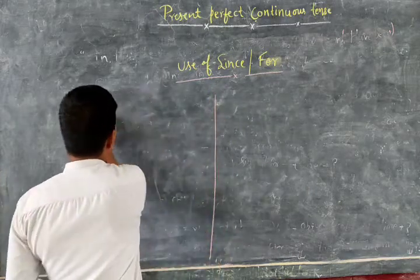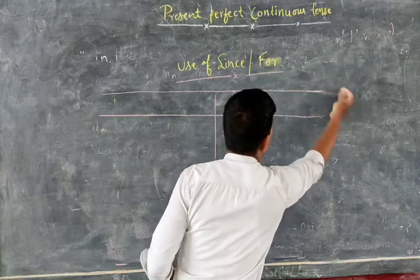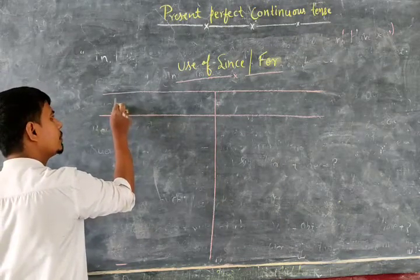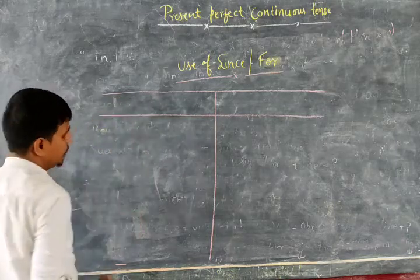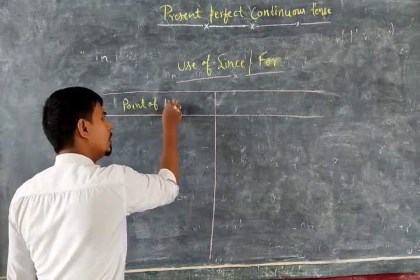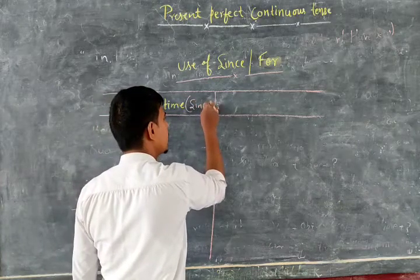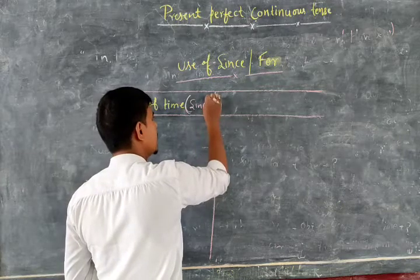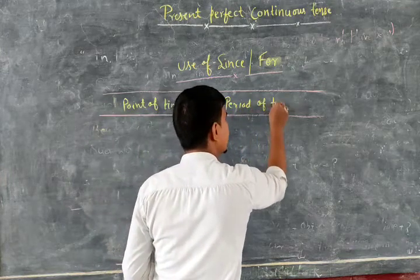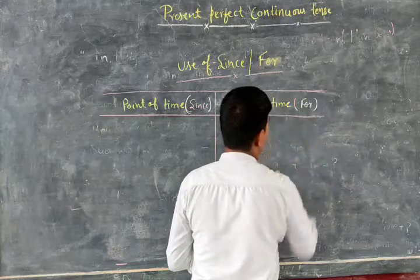You can make two columns, students. Generally, we use 'since' with a point of time — when we use 'since' — and with a period of time, we use 'for.'